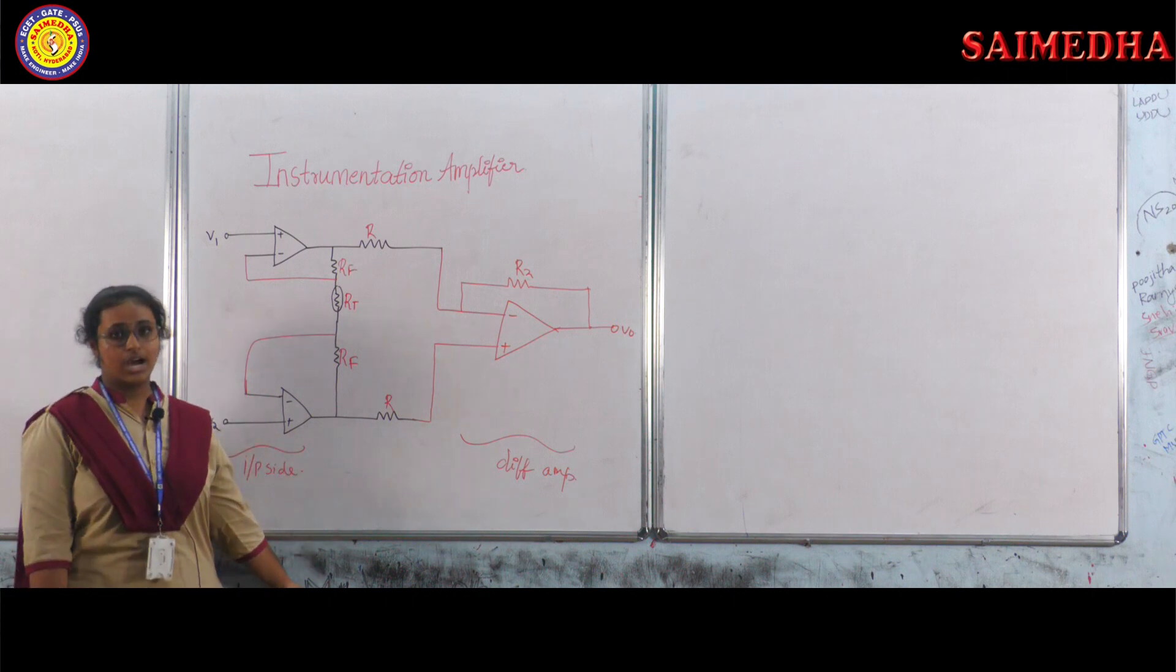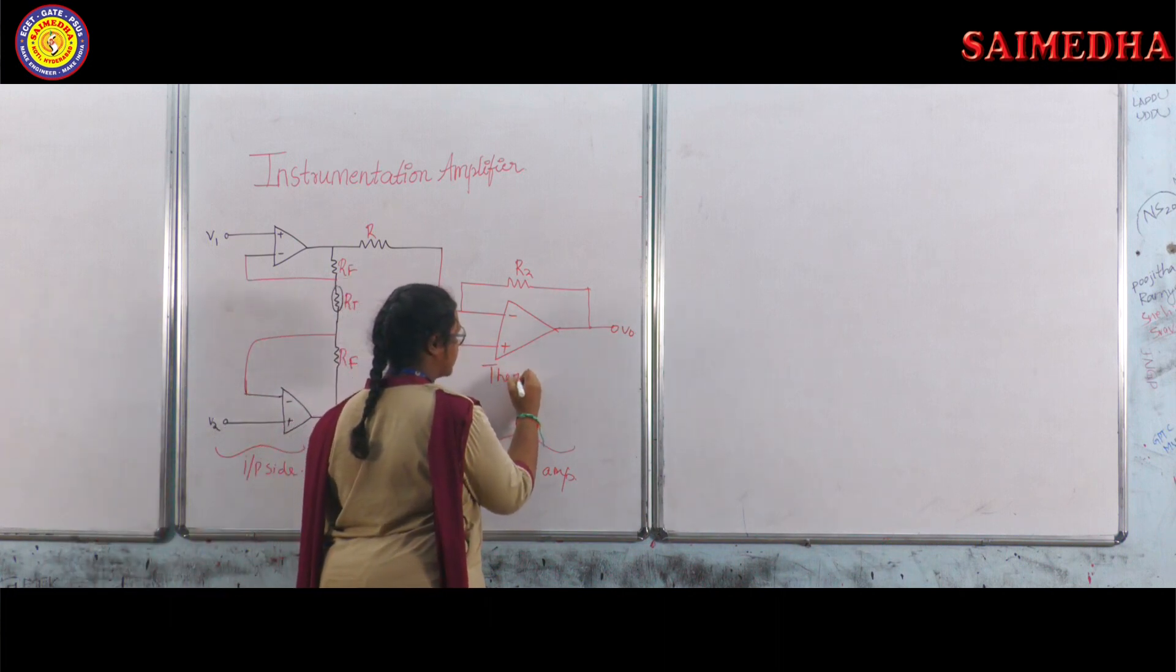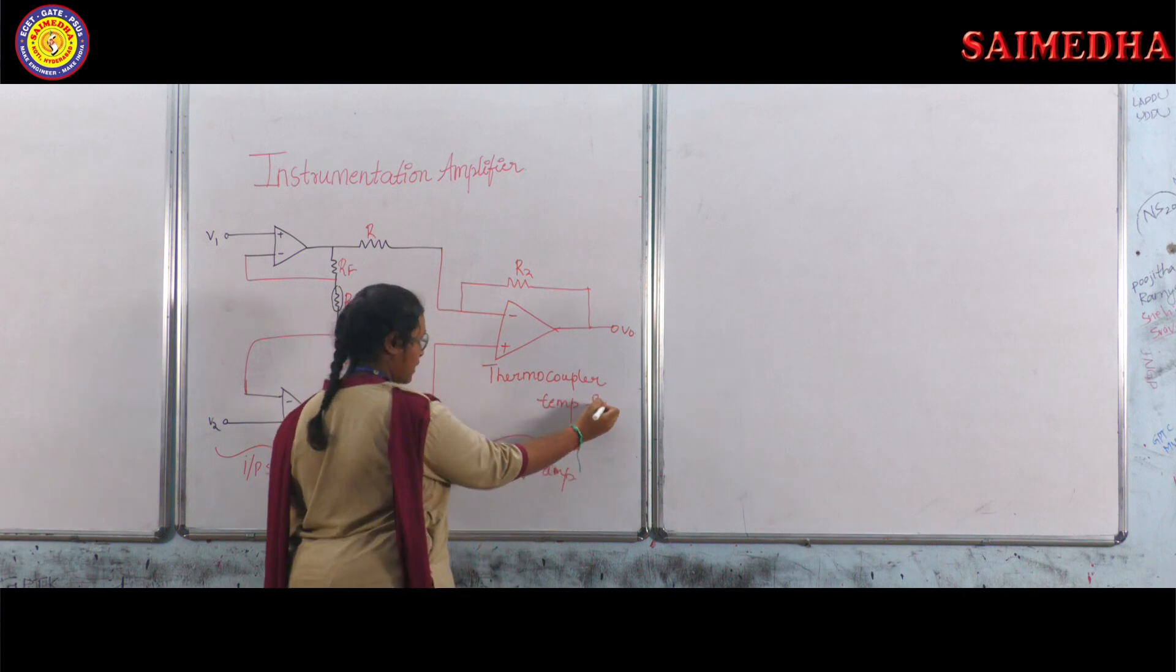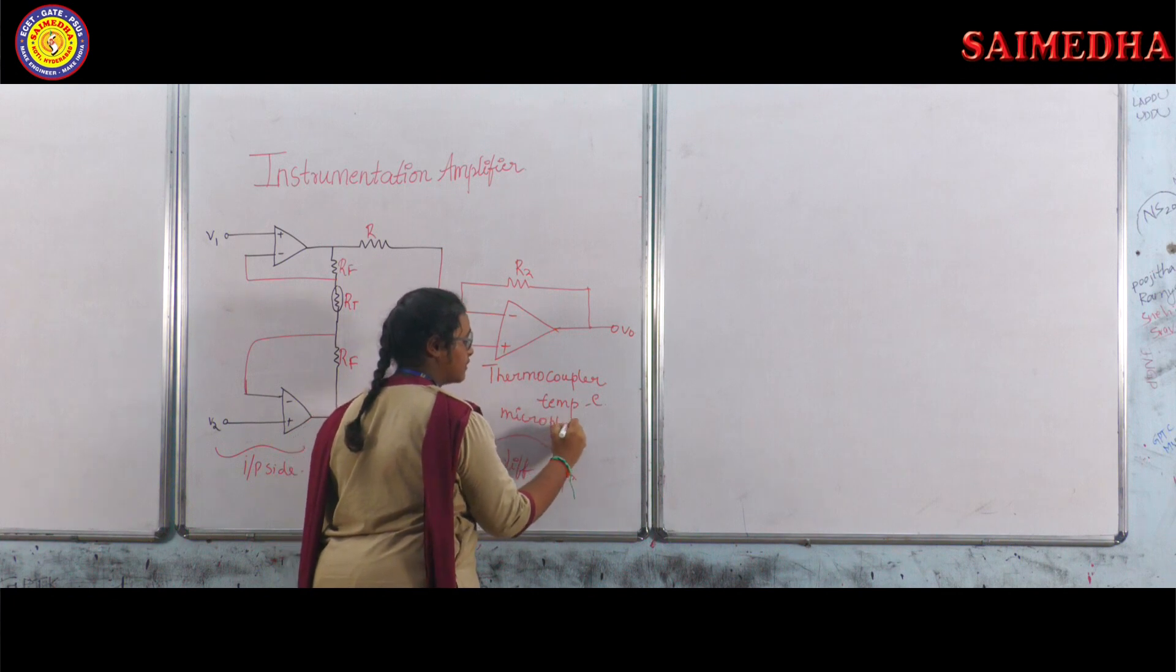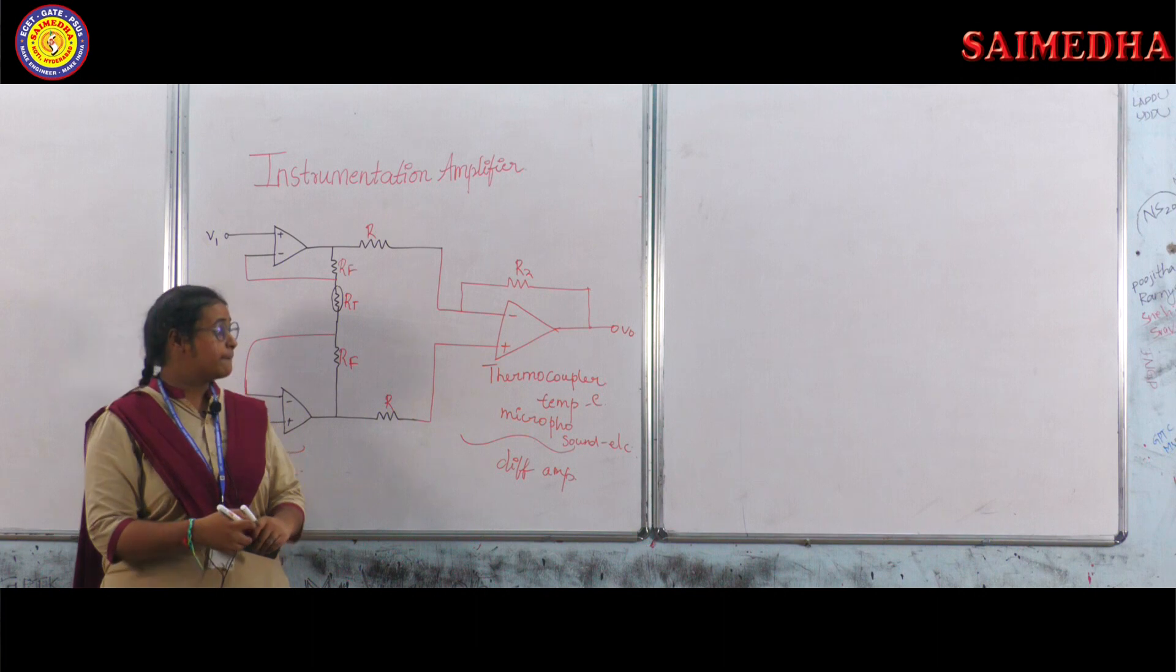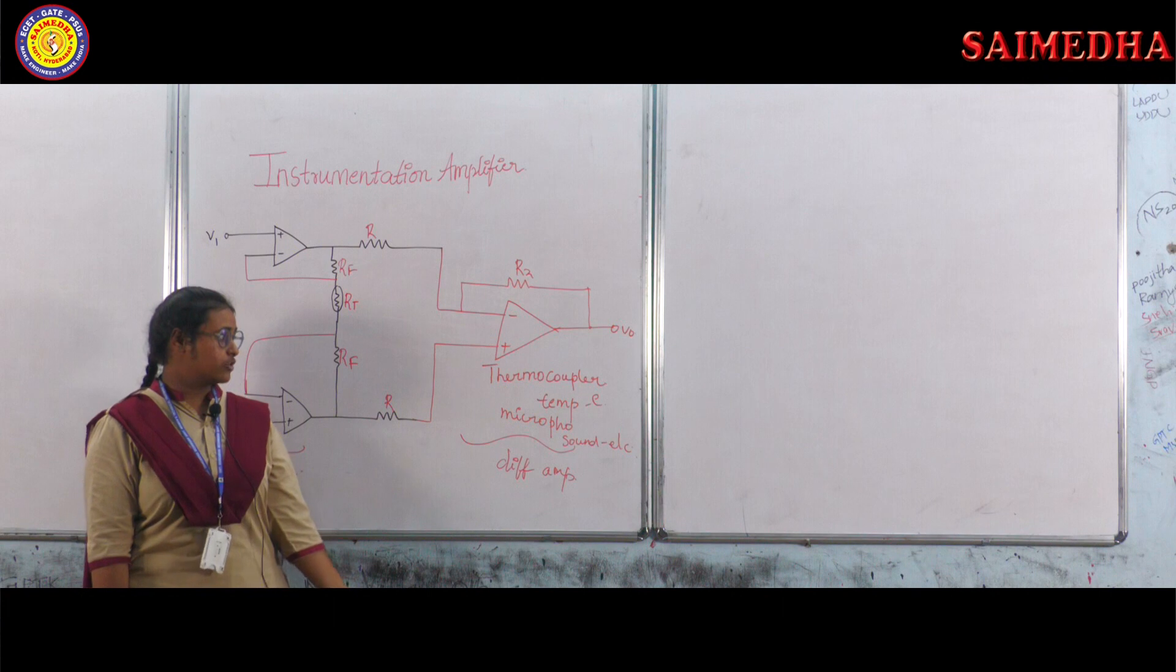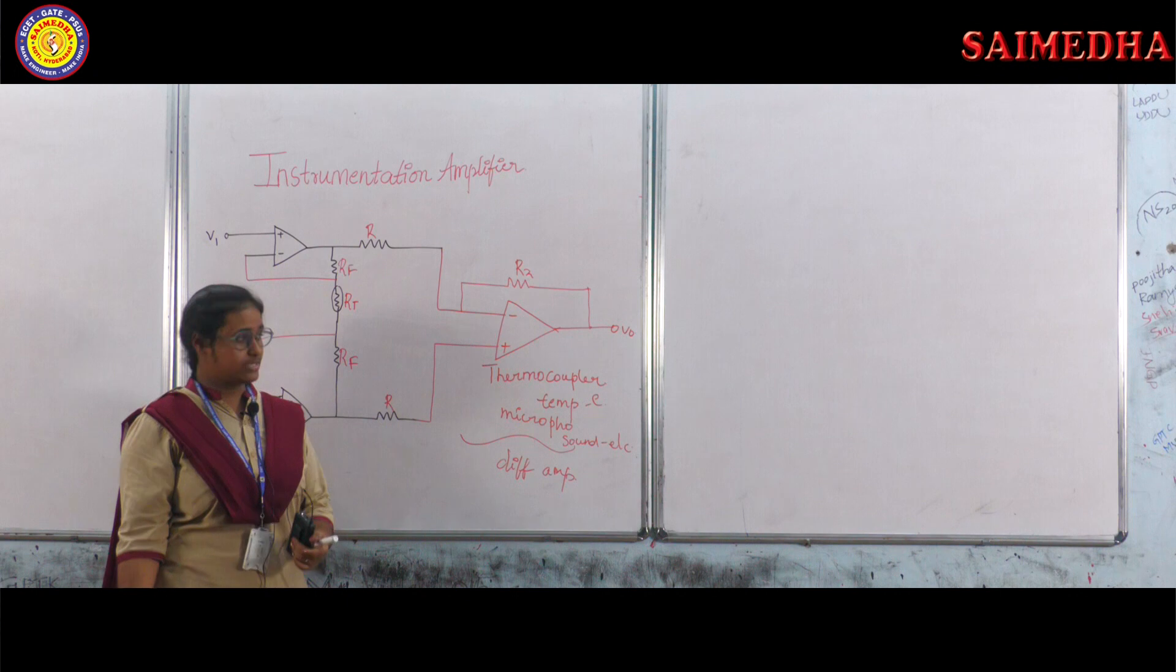Some of the sensors we use are thermocoupler which is used to change temperature into electrical signal. Next we use microphone which converts our sound energy into electrical energy. These are the basic sensors which we use. But the sensors output is very small, ranging from few microvolts. So we use this instrumentation amplifier to amplify these signals.